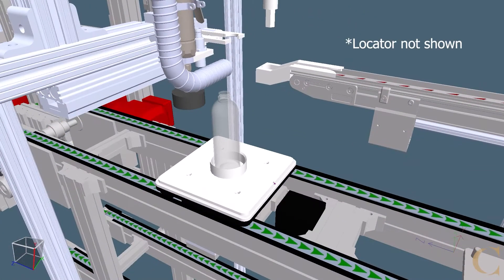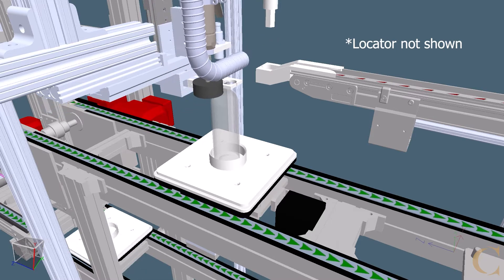At the first station, the bottle cap is removed and a locator is added to keep the bottle shape and aid in manufacturing.